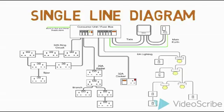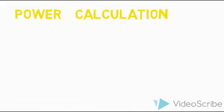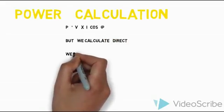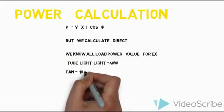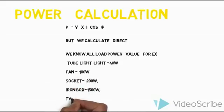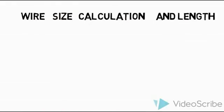We will implement the power calculation in a single-phase AC system. The TV can be 300W, AC can be 2500W, the socket can be 200W, the fan is 100W, and the light is 40W. Your load calculation should use these values directly.